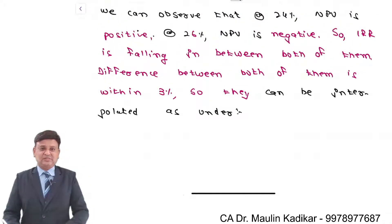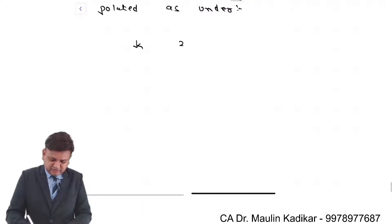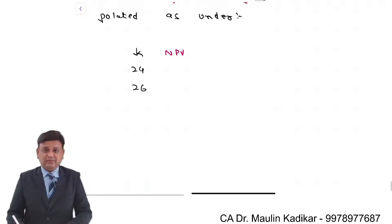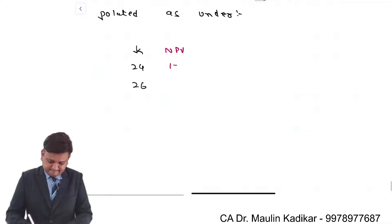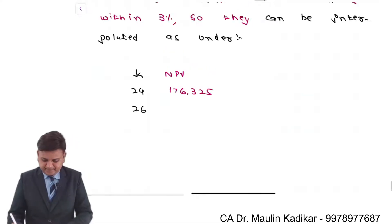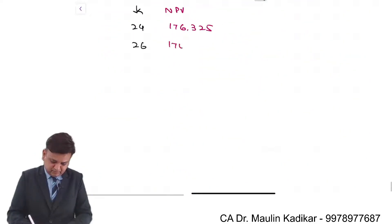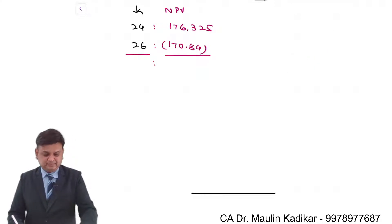Now, the interpolation process. Cost of capital 24, 26. NPV of the project, 176.325 and -170.84. We will compute the difference between the cost of capital and the difference of NPV. Difference between the cost of capital is 2%, and difference between the NPV is 347.165.